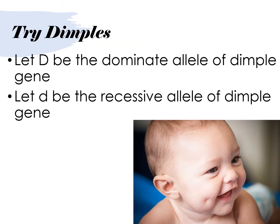After so many examples and explanations, I think you should try on your own. Let's try the case of dimples, and I give you some hints. Use big D. Let big D be the dominant allele of dimple gene, and let the small d be the recessive allele of the dimple gene.